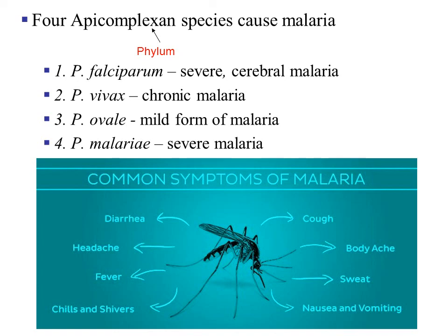There are four types of plasmodium: Plasmodium falciparum, which causes severe cerebral malaria; Plasmodium vivax, which causes chronic malaria; Plasmodium ovale, which causes a mild form of malaria; and Plasmodium malariae, which causes severe malaria.